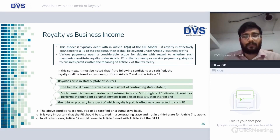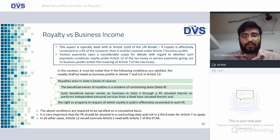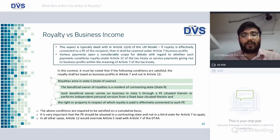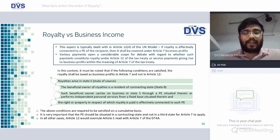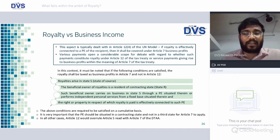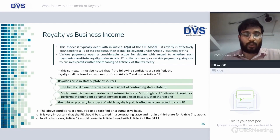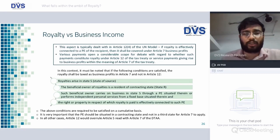Royalty versus business income: if the following conditions are satisfied, the royalty shall be taxed as business profits — royalty arises in the state of source; the beneficial owner of royalties is a resident of a contracting state; such beneficial owner carries on business in the source state through a PE situated therein or performs independent personal services from a fixed base therein; and the right or property in respect of which royalties are paid is effectively connected to such PE. It shall be noted that these conditions are not 'or' but 'and' — all conditions need to be satisfied cumulatively.